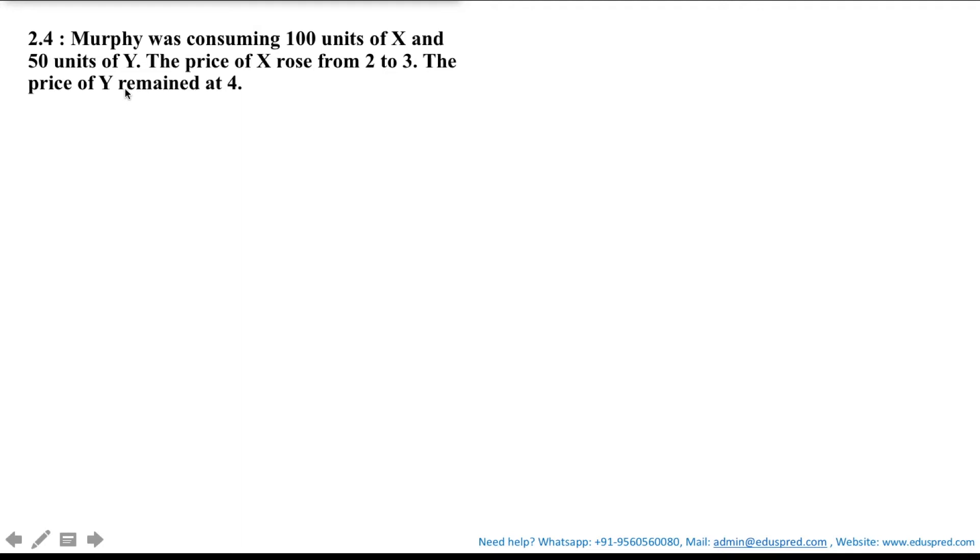In this video we will be solving this question which says Murphy was consuming 100 units of X and 50 units of Y. The price of X rose from 2 to 3. The price of Y remained at 4.